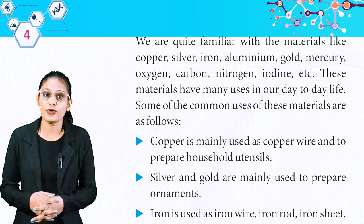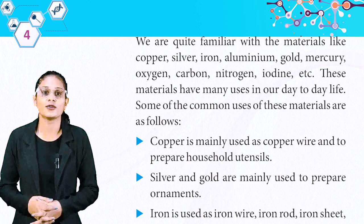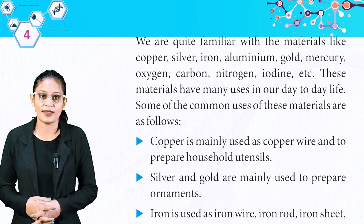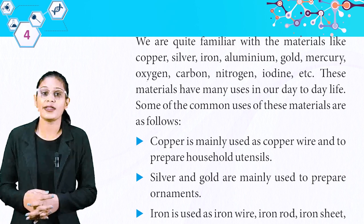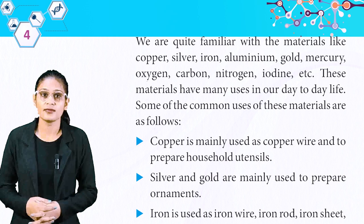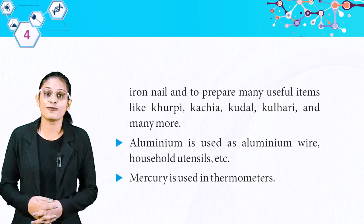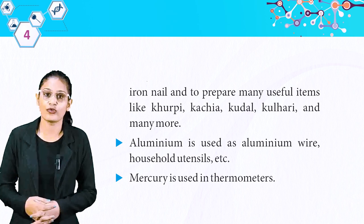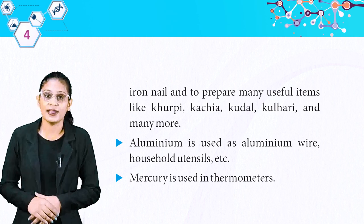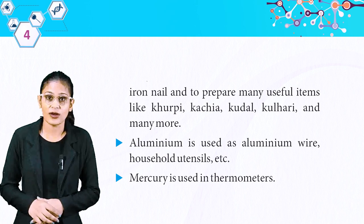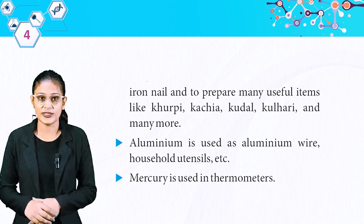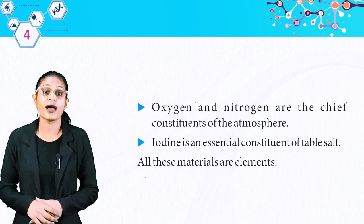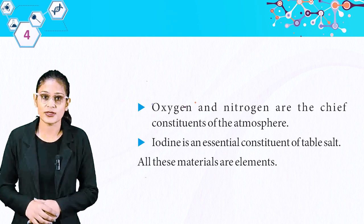Copper is mainly used as copper wire and to prepare household utensils. Silver and gold are mainly used to prepare ornaments. Iron is used as iron wire, iron rod, iron sheet, iron nail, and to prepare many useful items like khurpi, kachya, kudal, kulheri and many more. Aluminium is used as aluminium wire and household utensils. Mercury is used in thermometers. Oxygen and nitrogen are chief constituents of the atmosphere. Iodine is an essential constituent of table salt.